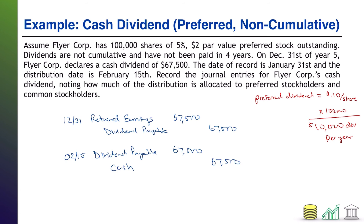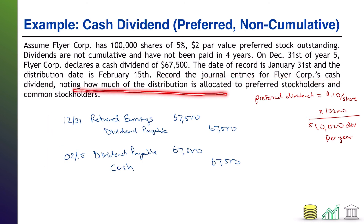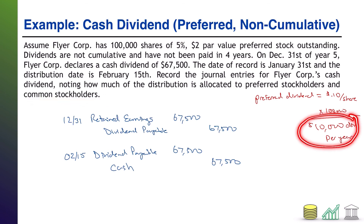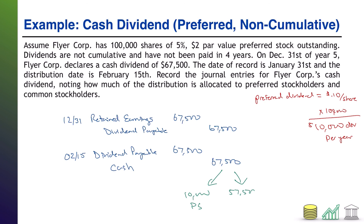We have now satisfied the first part of the requirements — the journal entries for the cash dividend. We also need to note how much of the distribution was allocated to preferred stockholders versus common stockholders. We calculated that preferred stockholders get $10,000 in dividend per year. Therefore, the $67,500 cash payment goes $10,000 to the preferred stockholders and the remaining $57,500 to the common stockholders.